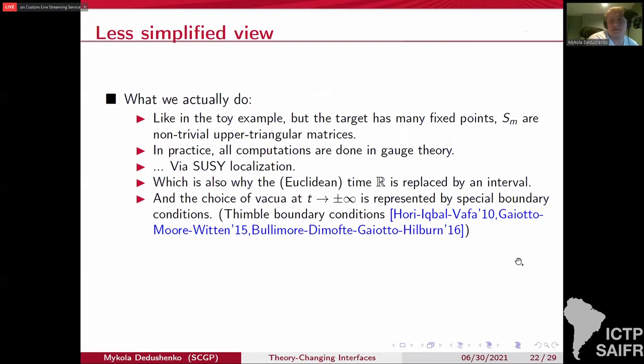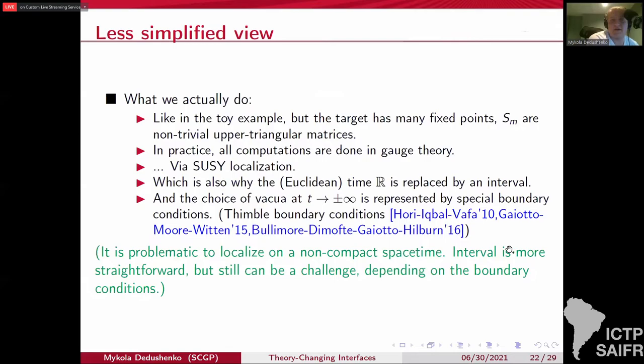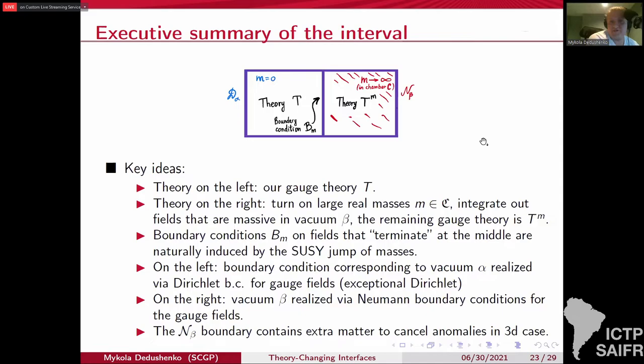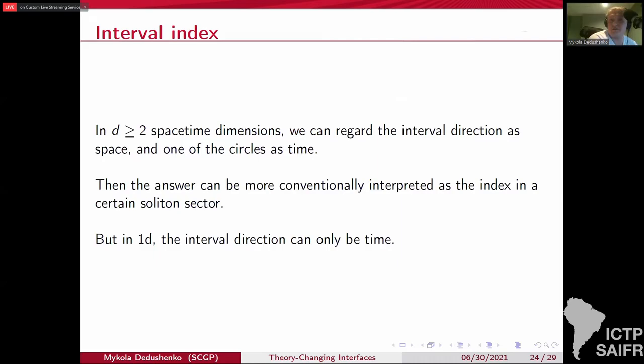And also the time is replaced by an interval with some boundary conditions representing vacuum, thimble boundary conditions. Well, because it's a little bit complicated and unclear. There are some problems with localization on the non-compact space. I can comment on it later. Here's a summary of the interval computation, which is just for you to look later if you want to. I'm going to skip it. Just a comment that once we are working in quantum field theory, besides this interval or the time direction, there's also circles. You can consider a circle as your time. And then it gives you a more conventional interpretation as an index in a certain soliton sector. But in 1D, there's only this interval direction. So it has to be considered as time. And if you want to work uniformly in that space-time dimension, it makes sense to think of that direction as time, even in 2D and in 3D.